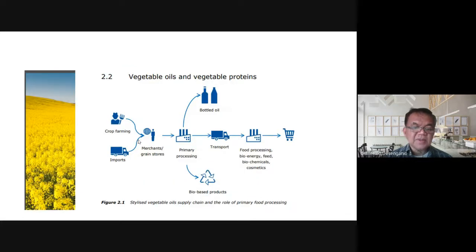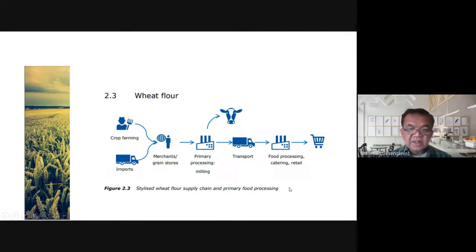Talking about supply chain, this is a sample for vegetable oils and vegetable proteins. From the farm or importation, it goes to merchants or grain stores, then to processing under primary as bio-based or bottled oil, then transportation logistics going to food processing secondary, and then finally to the consumer.